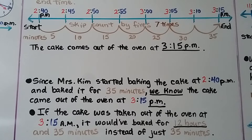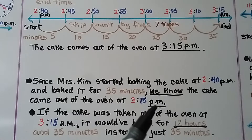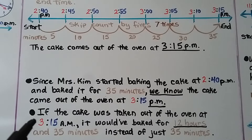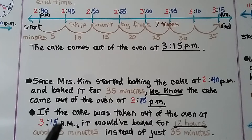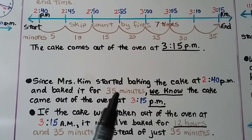Since Mrs. Kim started baking the cake at 2:40 p.m. and baked it for 35 minutes, we know the cake came out of the oven at 3:15 p.m. If the cake were taken out at 3:15 a.m., it would have baked for 12 hours and 35 minutes instead of just 35 minutes — because for the clock to go from p.m. to a.m., 12 hours would have had to pass.